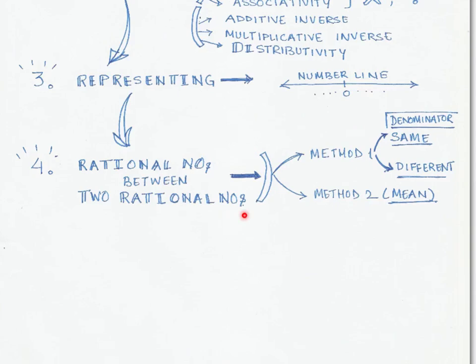So there could be same denominator or different denominator in rational numbers, and we also look at another method which involves using the mean. So we will discuss these details later. So that is what we are going to cover in this chapter.